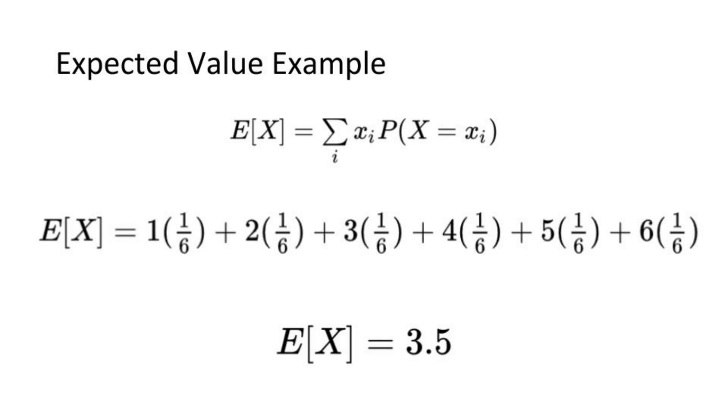Remember it's not possible to roll a 3.5, but your expected outcome doesn't have to be in the set of possible outcomes.